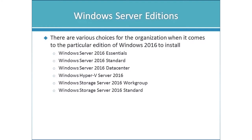Windows Server 2016 Standard Edition is primarily designed for physical server deployments. It supports virtualization, but includes licenses for only two virtual machines, making it unsuitable for most production virtualization hosts. Standard supports up to 64 processor sockets, up to 4 terabytes of RAM, and provides the vast majority of roles and features. You can also install Standard in the Nano Server installation option.